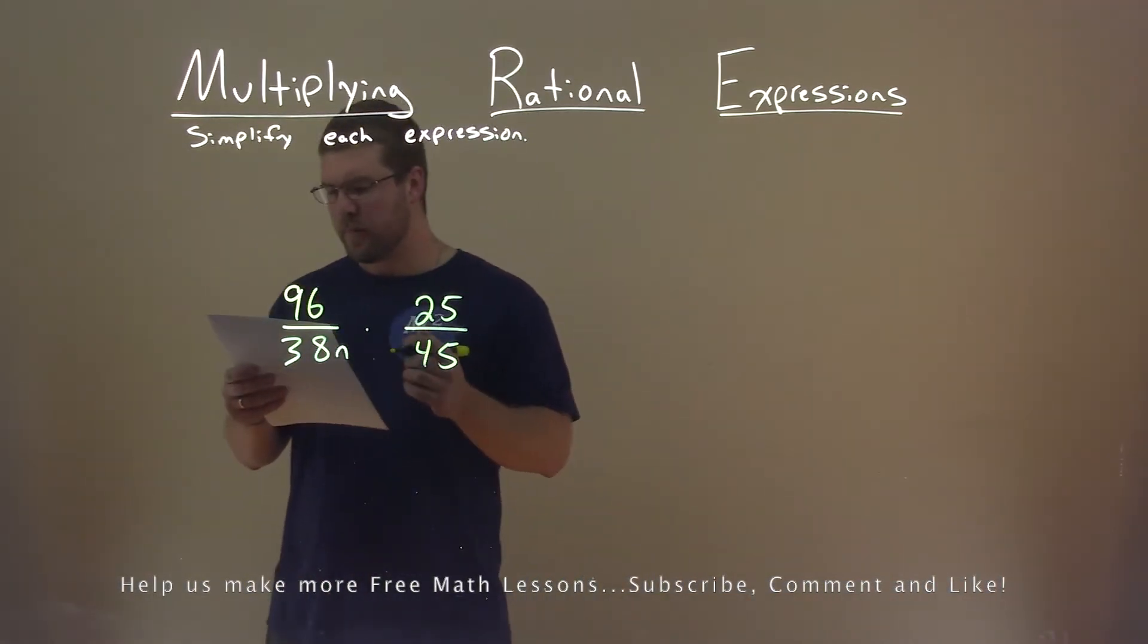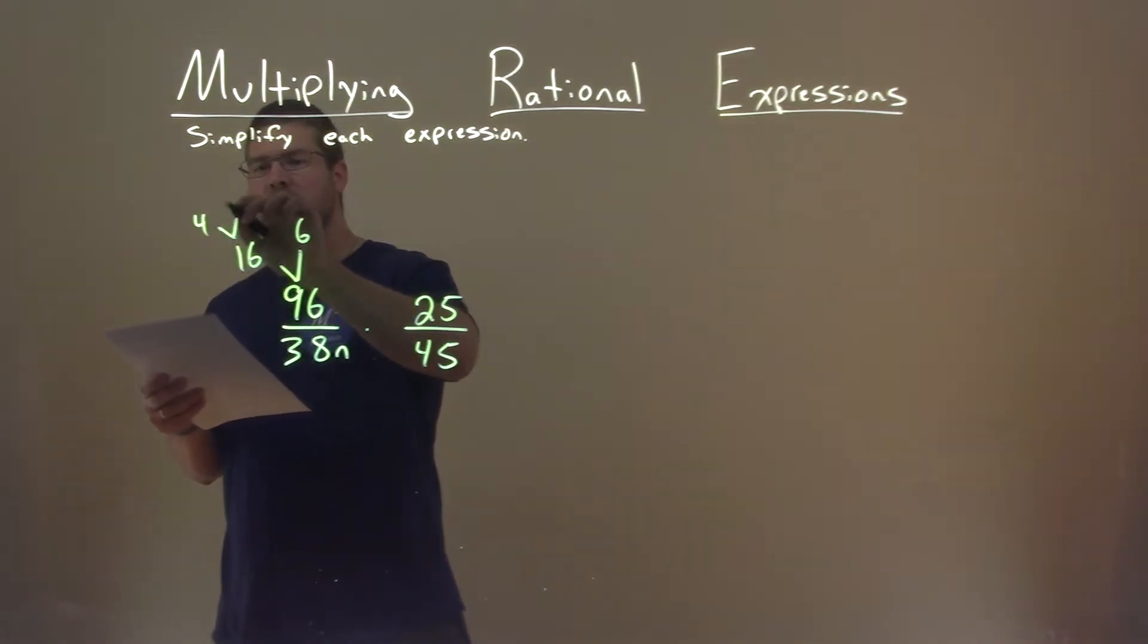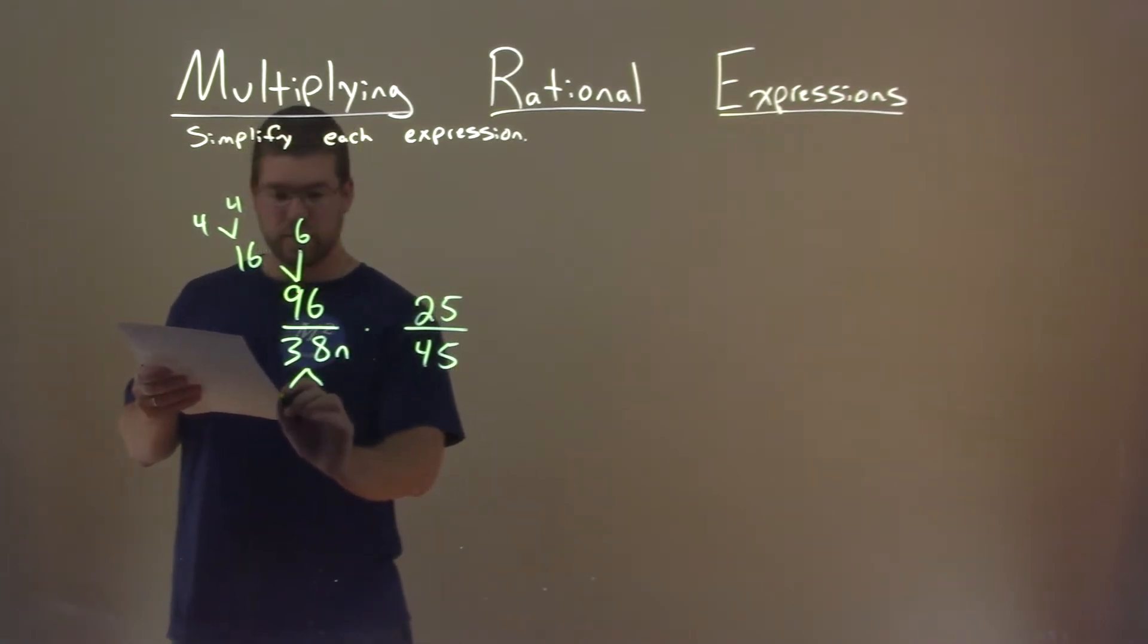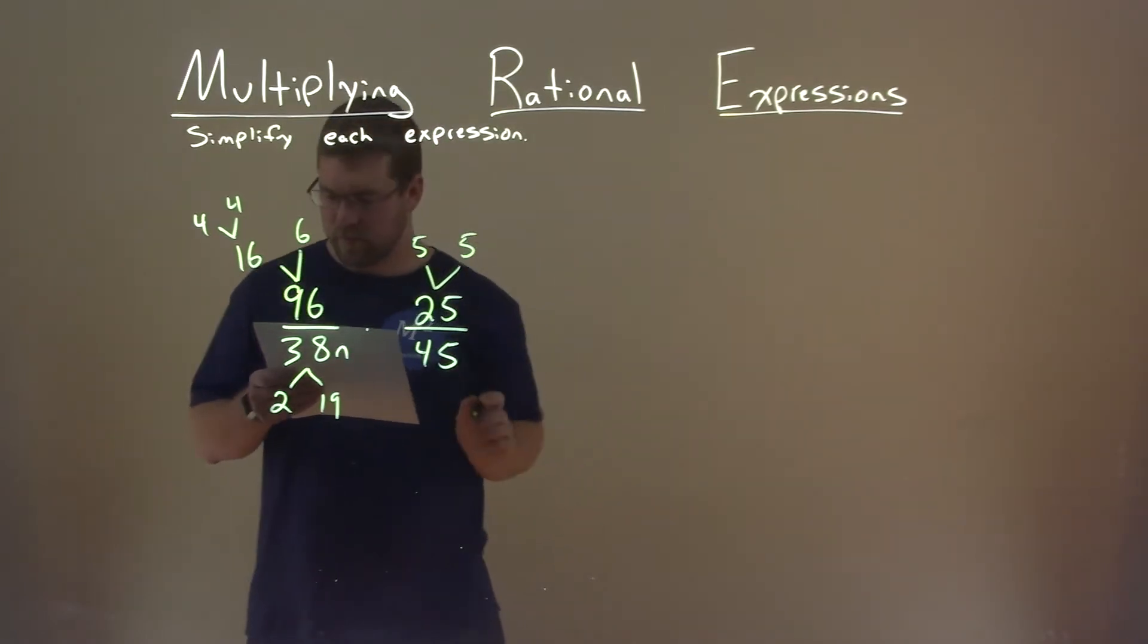Let's break down what we know. 96 is 16 times 6, and 16 we know is 4 times 4. 38 is just 2 times 19, and 25 is 5 times 5.